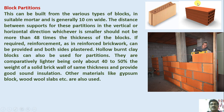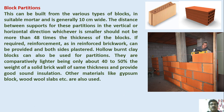Block partitions can be seen in various types — nowadays concrete blocks, hollow brick blocks, and many other types are available for block construction. This can be built from various types of blocks in suitable mortar and is generally 10 centimetres wide. The distance between supports for these partitions in the vertical or horizontal direction, whichever is smaller, should not be more than 48 times the thickness of the blocks. Hollow burnt clay blocks can also be used for partitions — they are comparatively lighter, being only about 40 to 50 percent the weight of a solid block wall of the same thickness, and provide good sound insulation.